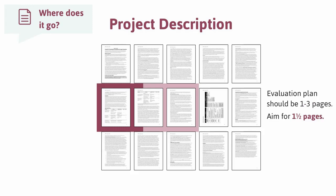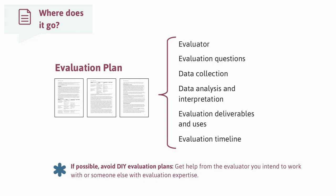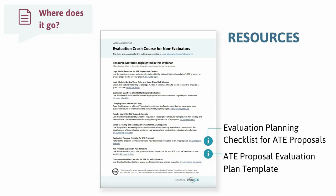Of the 15-page project description, 1 to 3 pages should be dedicated to evaluation — I'd aim for around a page and a half. In this space, you should identify your evaluator, what the evaluation questions will be, what data will be collected and how it will answer those questions, and what evaluation reports or deliverables will be prepared and when. We have a video series and webinar that go into more depth on this. There's also a comprehensive ATE evaluation planning checklist and an evaluation plan template in the handout.